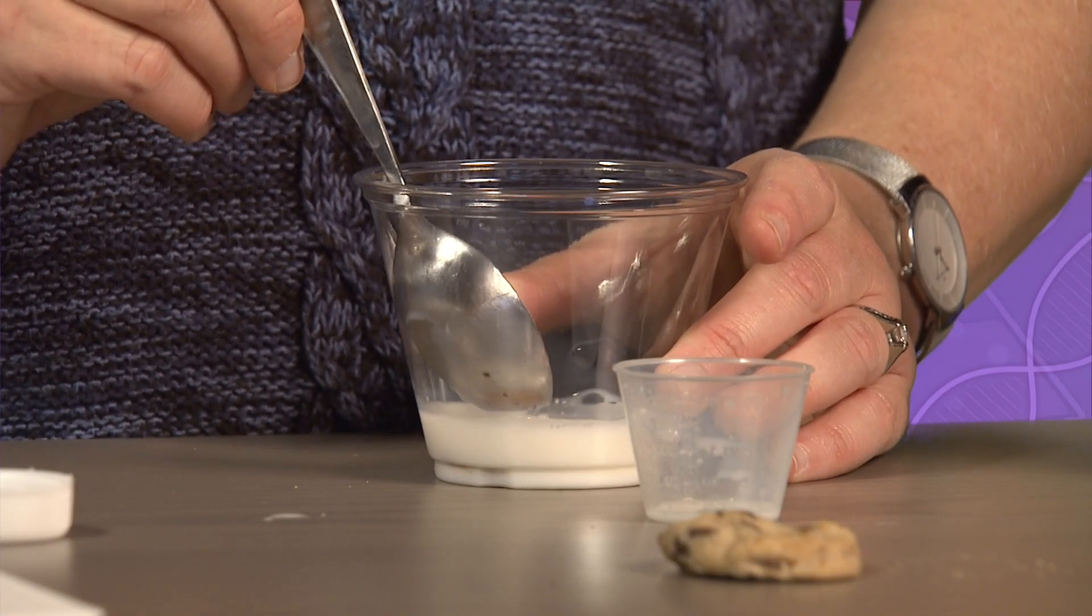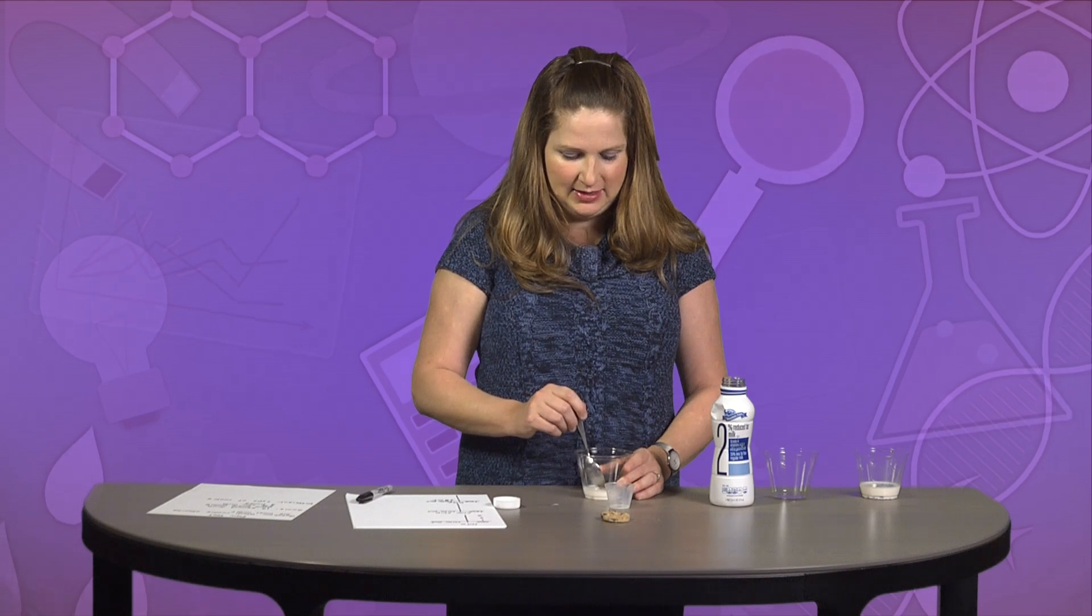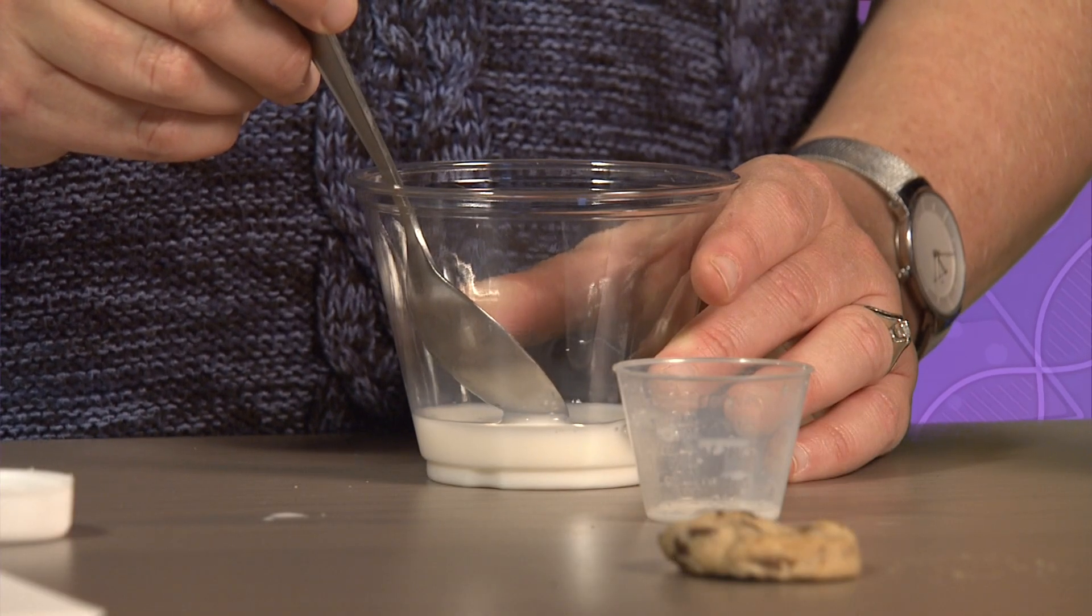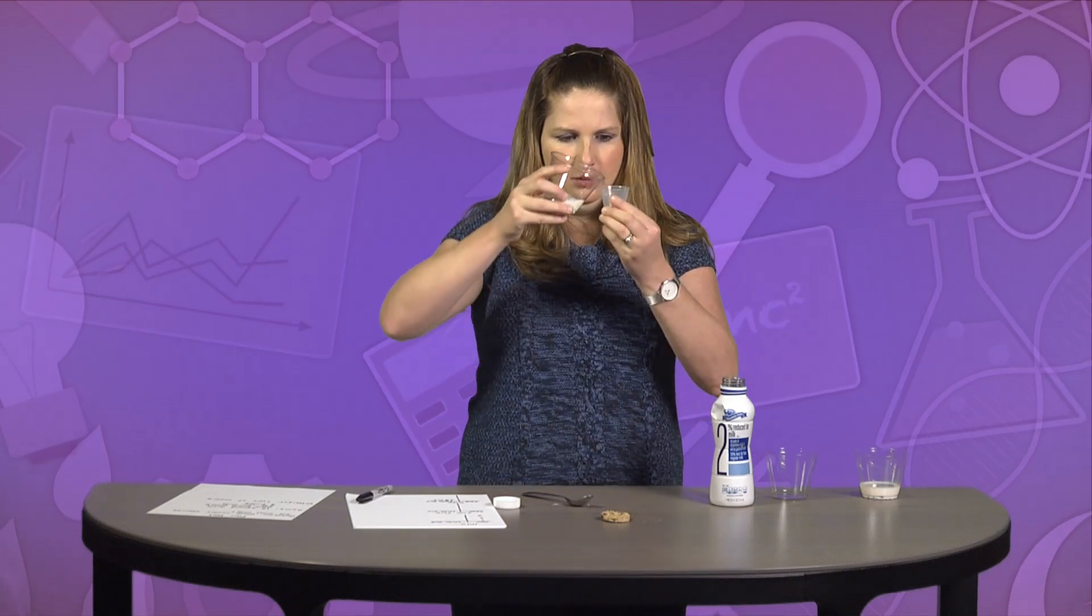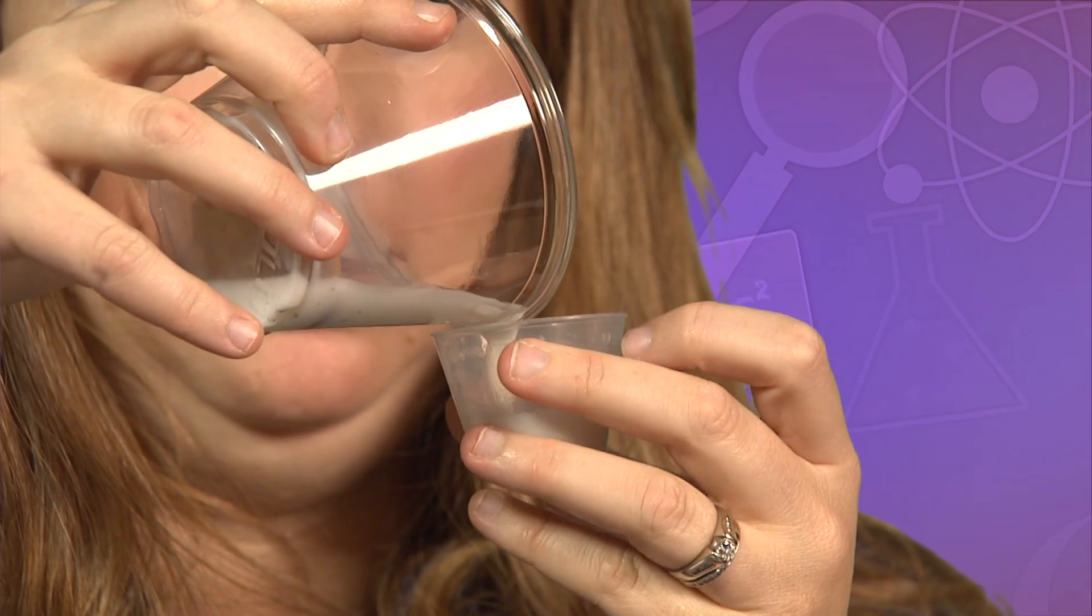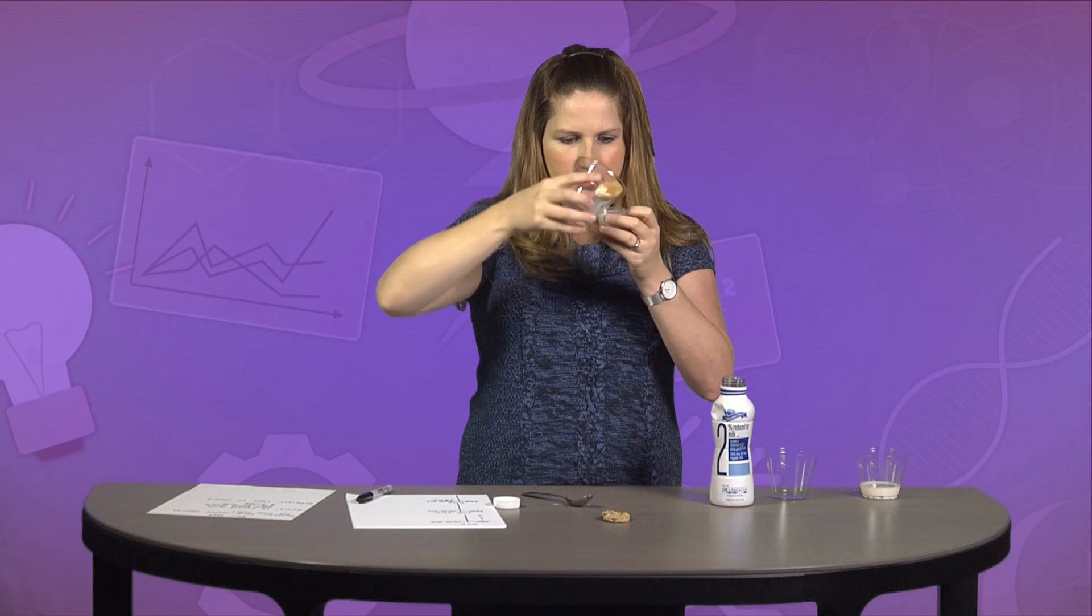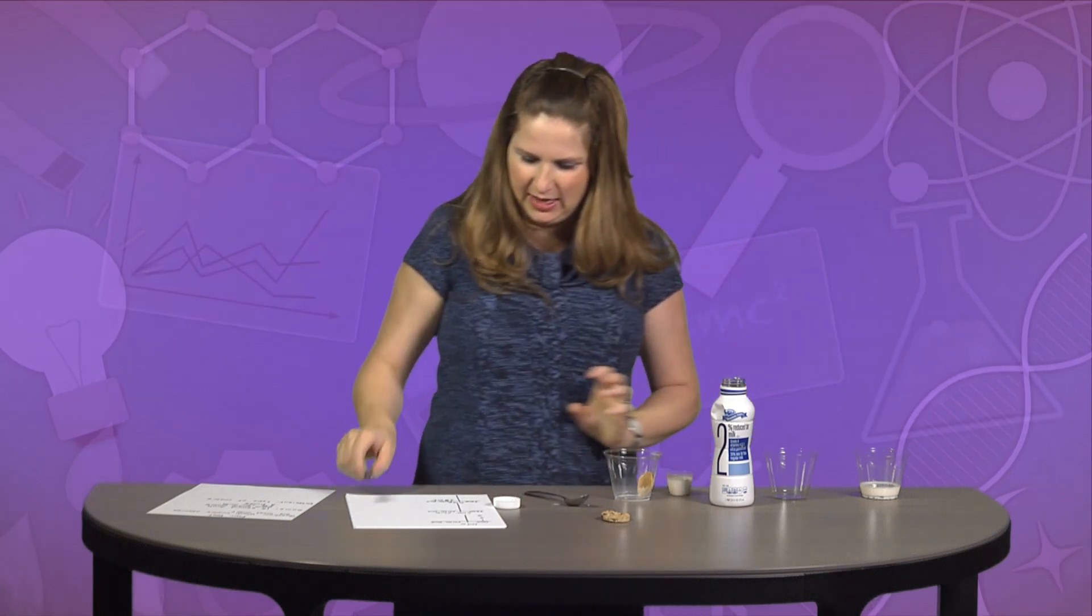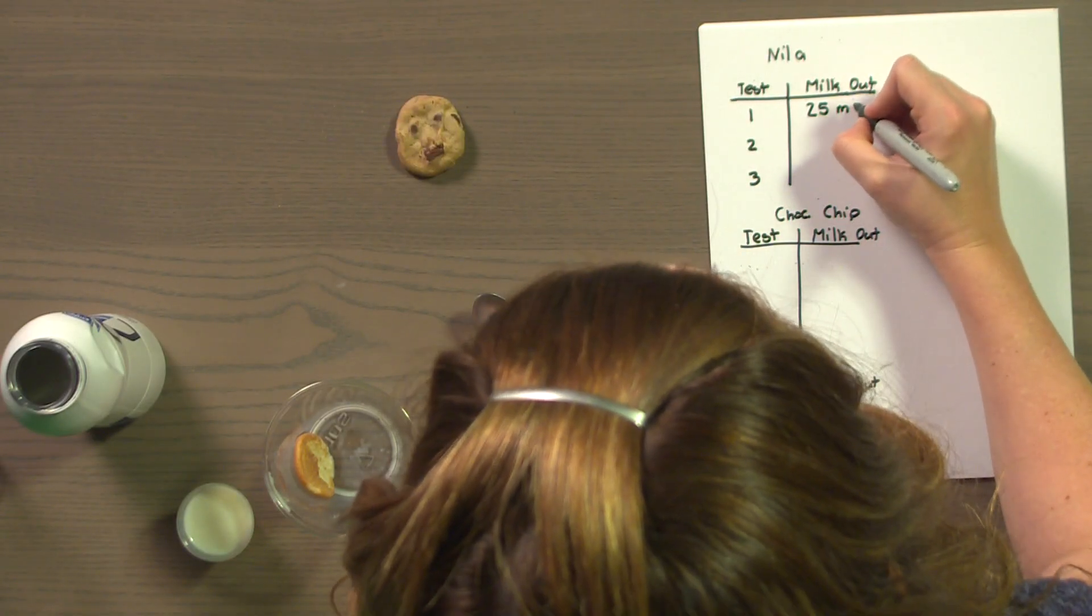1, 2, 3, 4, 5, 6, 7, 8, 9, 10, 11, 12, 13, 14, and 15. All right. Oh, not the cookie. All right. Ooh, interesting. 25 milliliters came out of vanilla wafer. Making sure to record my results each time.